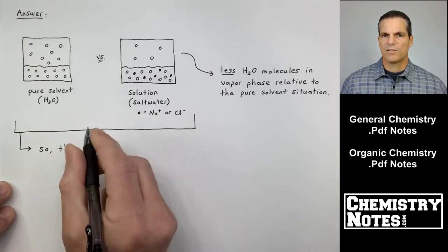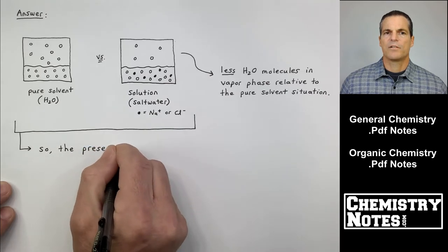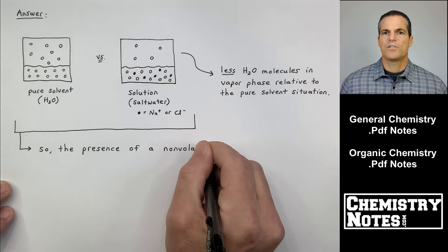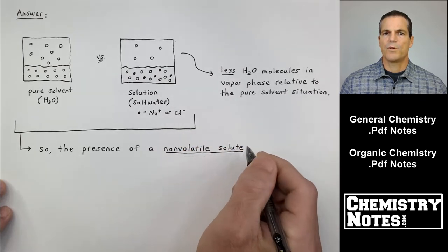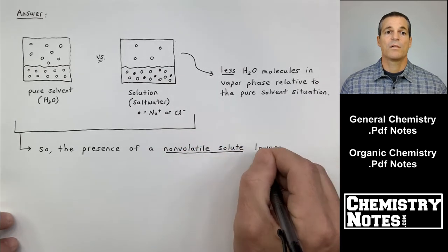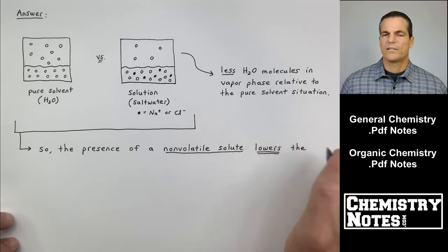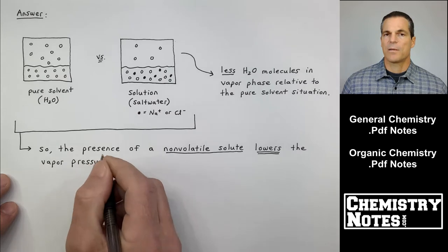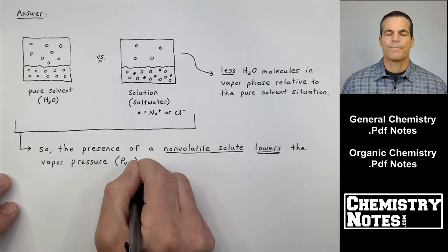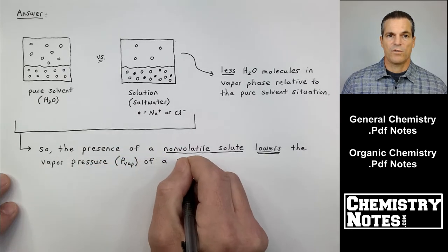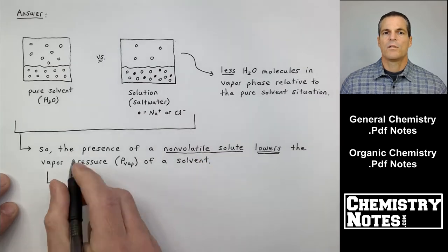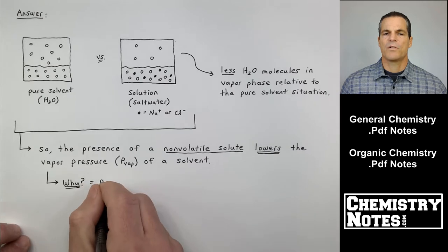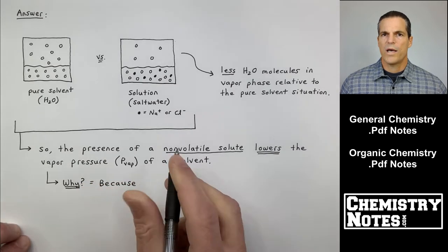And we want to know why this is. First, let me read what it says over there on the right. Regarding our sealed container on the right hand side, it says less H2O molecules in the vapor phase relative to the pure solvent situation on the left. Why is this? Well, we're going to answer that question in just a second. But first we want to kind of summarize what we see, what our observation is from these two comparisons. So the presence of a non-volatile solute lowers the vapor pressure of a solvent.